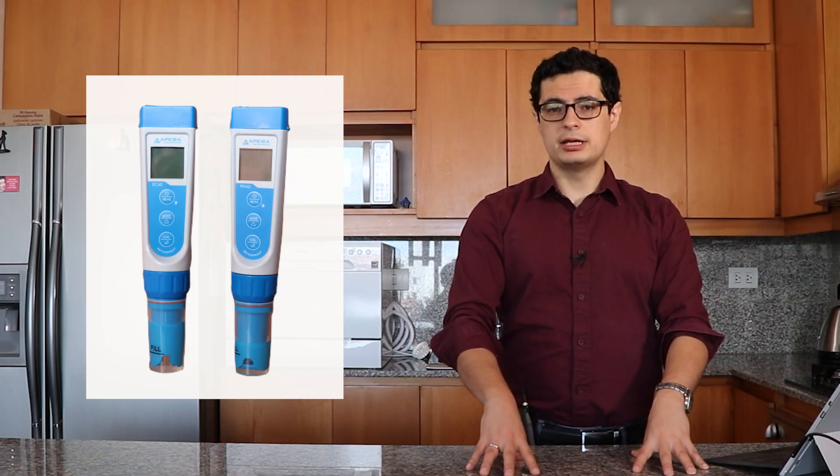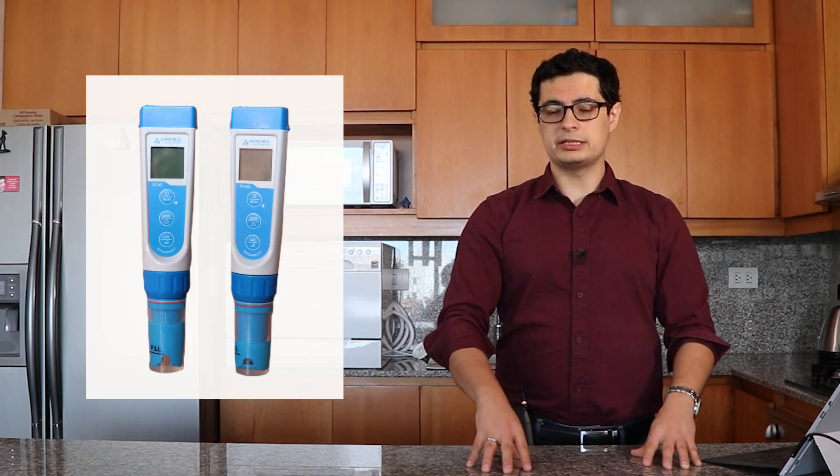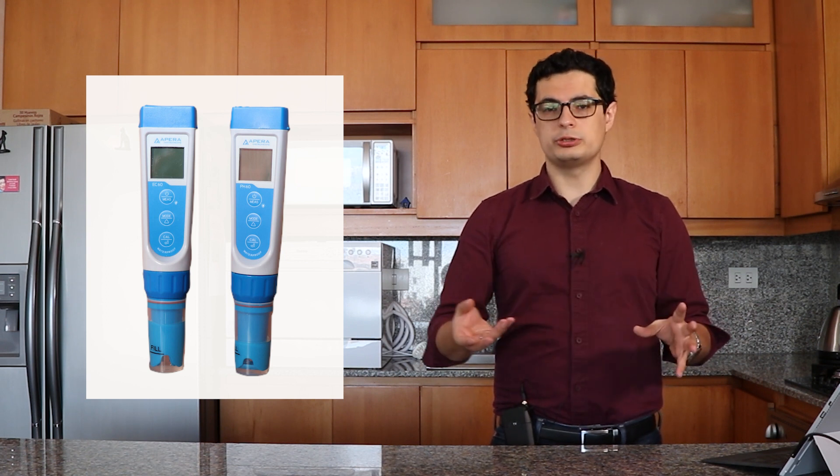So unless the temperature is super consistent, a normal very cheap TDS meter is not going to work well. My recommendation is to use meters that do automated compensation of temperature differences — for example, the APERA EC60, which is a conductivity meter that automatically compensates for temperature differences.